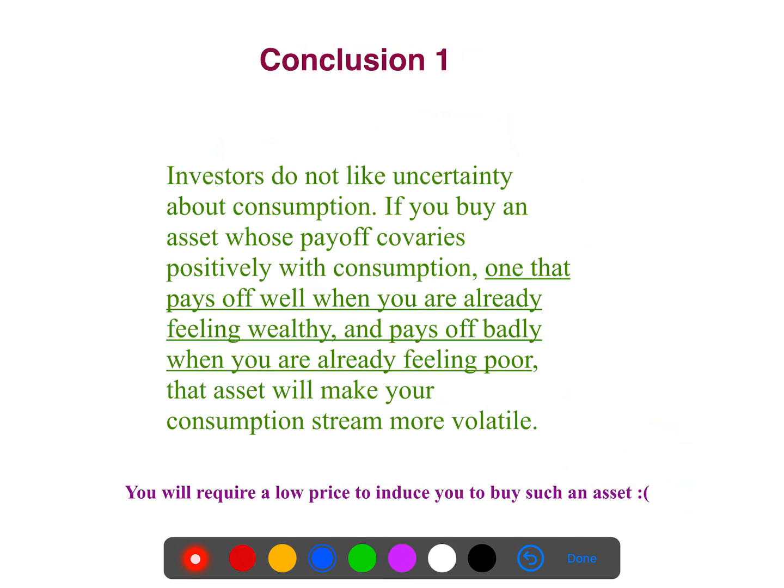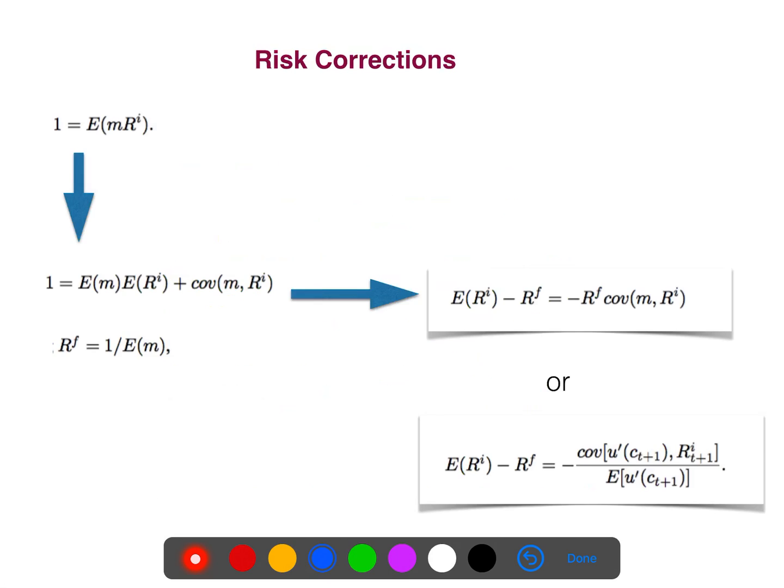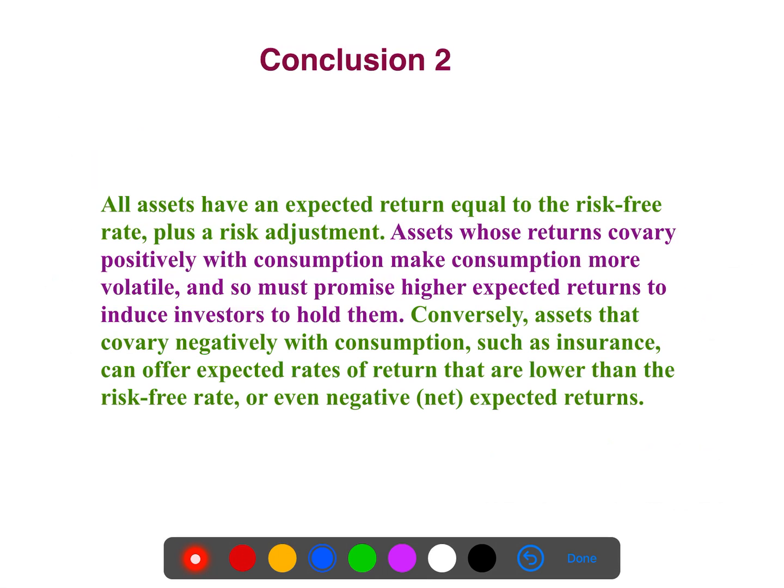Conclusion one: Investors do not like uncertainty about consumption. If you buy an asset whose payoff co-varies positively with consumption, one that pays off well when you are already feeling wealthy and pays off badly when you are already feeling poor, we have a risk correction. If you combine these equations, you get this one in terms of utility. Conclusion two: Assets whose returns co-vary positively with consumption make consumption more volatile and must promise higher expected returns to induce investors to hold them.